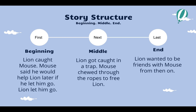So boys and girls, as we think about our story elements, we also have to think about something called story structure. The story structure is the beginning, the middle, and the end — that includes the problem and the solution. In the beginning, lion caught mouse. Mouse said he would help lion later if he let him go, and lion let him go. In the middle, lion got caught in a trap, and mouse chewed through the ropes to free lion. And last, in the end, lion wanted to be friends with mouse from then on.